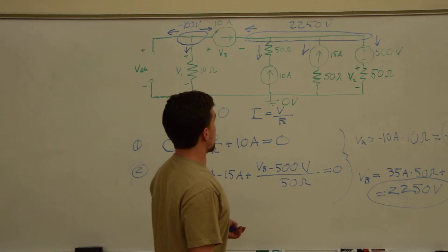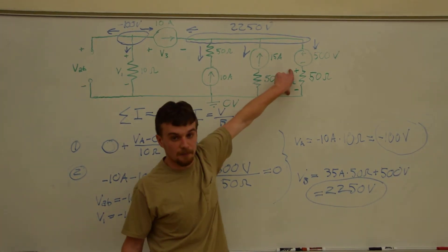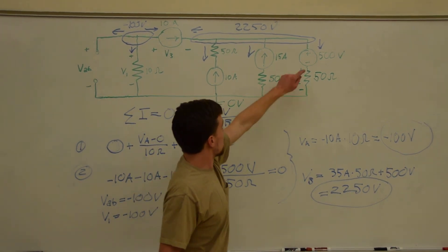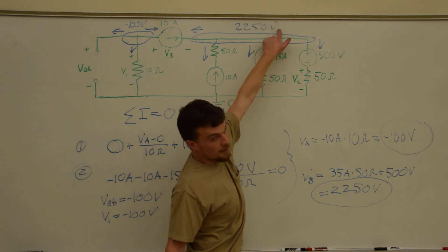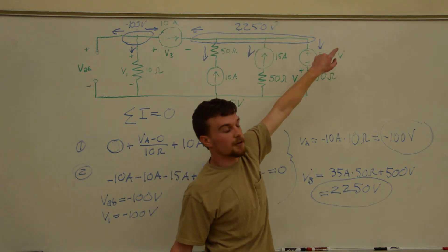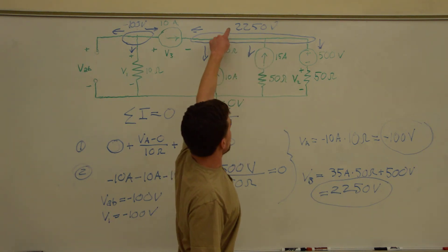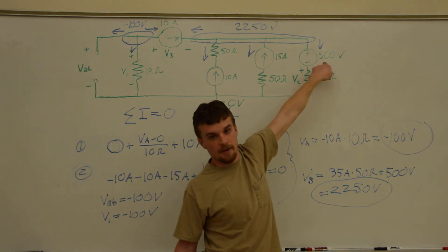Next, we want V2, which is the voltage across this resistor. So, we know this is zero volts. We know this is 2250 volts, and that this is 500 volts. So, the voltage across here is going to be 2250 minus this 500 volts.